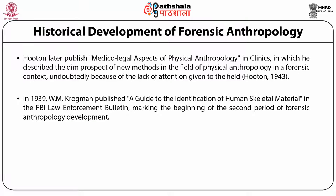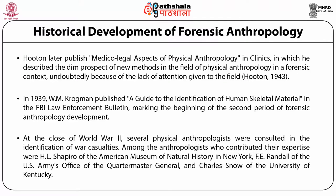In 1939, W.M. Krogman published a guide to the identification of human skeletal material in the FBI Law Enforcement Bulletin, marking the beginning of the second period of forensic anthropology development. At the close of World War II, several physical anthropologists were consulted in the identification of war casualties. Among the anthropologists who contributed their expertise were H.L. Shapiro of the American Museum of Natural History in New York, F.E. Rendell of the U.S. Army Office, and Charles Snow of the University of Kentucky.